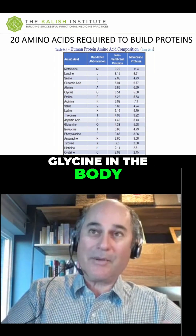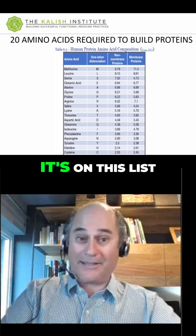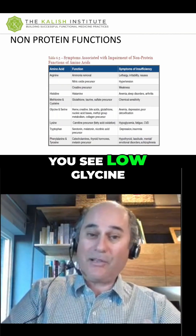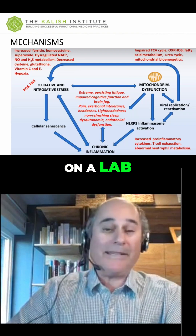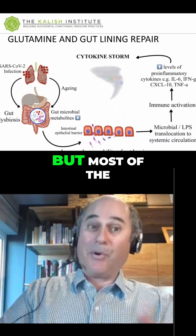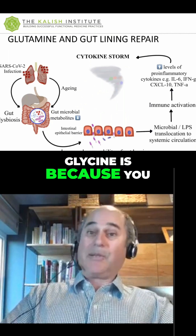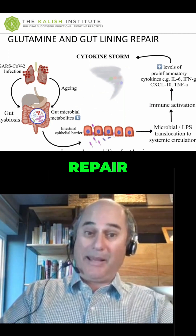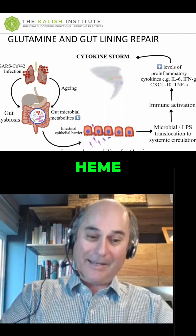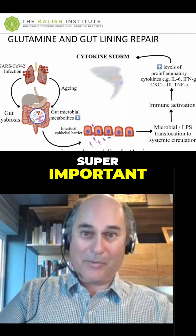The major role of glycine in the body is protein synthesis — all proteins. So if you see low glycine on a lab, it's going to help their bile acid production, it's going to help their glutathione production. But most of the reason you're giving that glycine is because you want them to be able to heal and repair by making antibodies, heme, hemoglobin, and all these things. Super important.